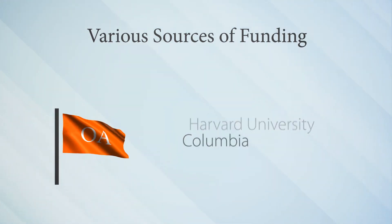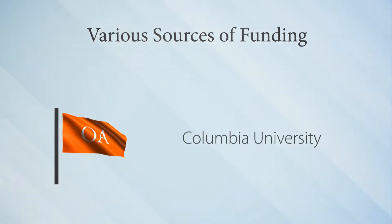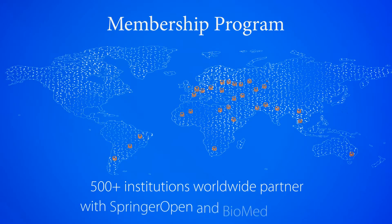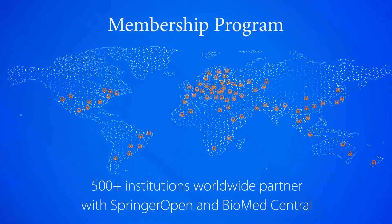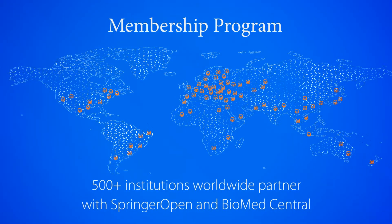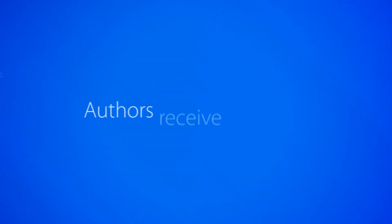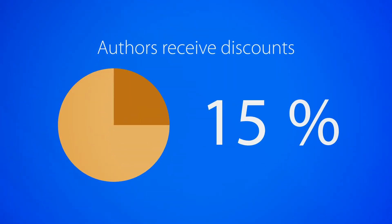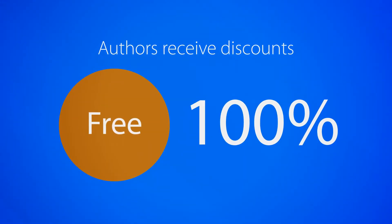Over 500 institutions worldwide currently have memberships with Springer Open and BioMed Central, and their affiliated authors receive discounts from 15 to 100 percent depending on their level of membership. We also have a waiver program in place so authors from low-income countries don't have to pay any article processing charges.